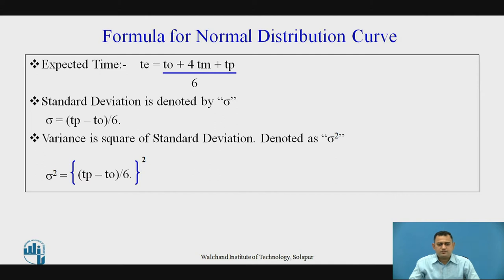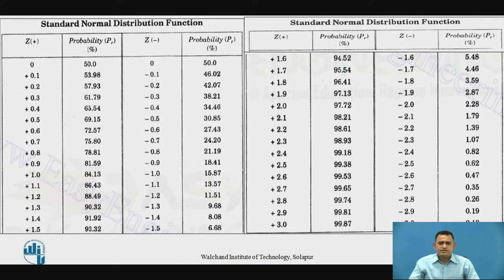These are the formulas for the normal distribution curve. The expected time Te is necessary to determine the expected time for each activity, which helps finalize the overall project duration and the critical path. We also have the standard deviation and variance of the normal distribution curve. This table shows the standard normal distribution with normal deviate Z and probability completion percentage. We utilize these formulas and this table for finalizing the scheduled completion time and probability completion time of the project.